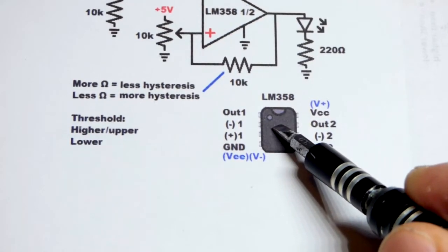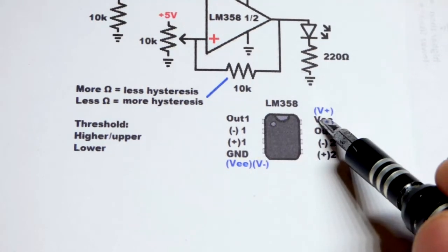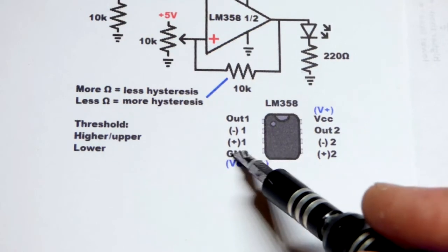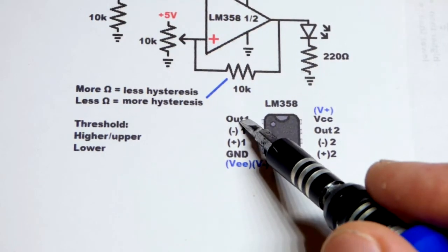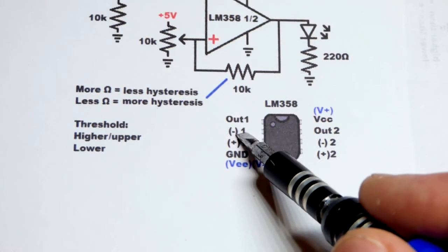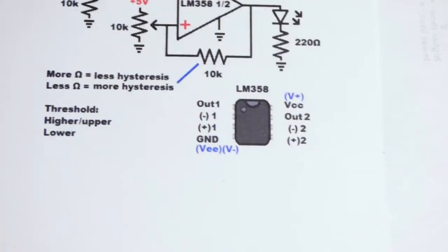So in any case, we have the pin layout here. As I said, there's one op-amp on the right, one on the left, and then we had to power it. Positive supply to pin 8 and negative supply ground to pin 4. Output on top, inverting input right below it. So pin 1, and then inverting input pin 2, non-inverting input pin 3 right there. Pretty straightforward.